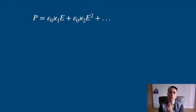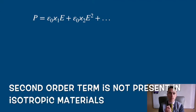We saw that the polarization can be written in terms of the susceptibility of the material and the applied electric field, the field that induces those dipoles. If we have an isotropic material, the second-order term will not be present.